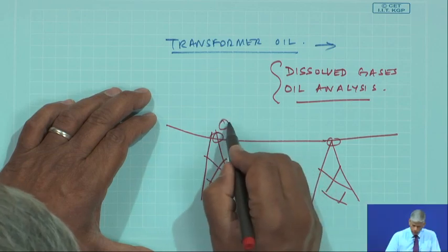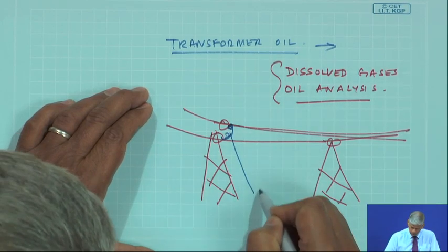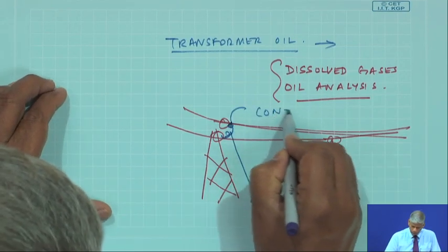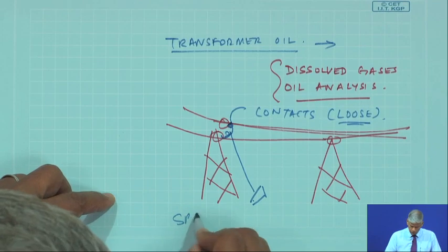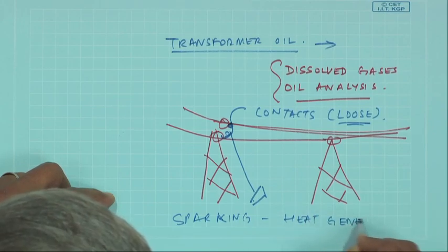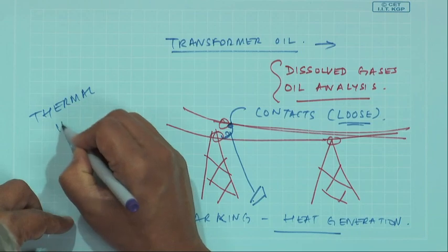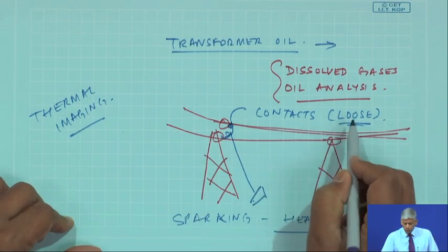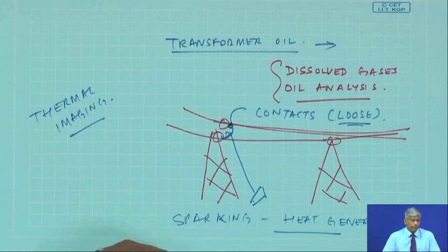For switchgear — current-carrying conductors where connections and contact points exist — loose contacts create sparking and heat generation. Through thermal imaging, such loose contacts can be identified. This will be discussed further when we cover thermography in the next lecture. More on MCSA can be found in the referenced book and website. Thank you.